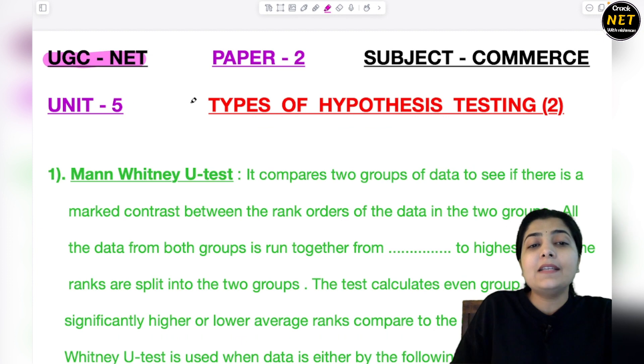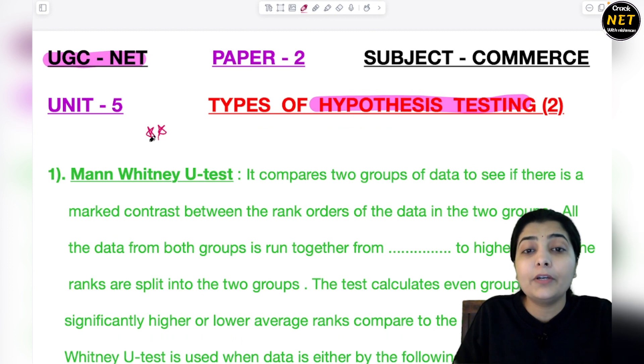This last topic of unit 5 is types of hypothesis testing. In the last session we did three to four methods. Here we will do the remaining methods. Previously, questions came from the methods we covered in the last session, but recently if you check the last two to three UGC NET Commerce papers, hypothesis questions are coming from these methods. We will put a star for this session - definitely a question will come from this particular session, so understand this session very well and cover it with me.